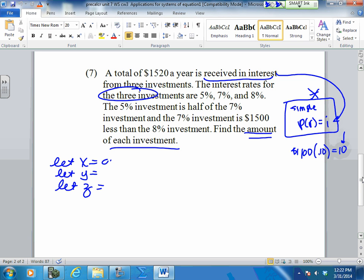So let X equal, let Y equal, let Z equal. We're looking for the amount that was invested. So the amount at 5%, the amount at 7%, and the amount at 8%. How do I write 5% as a decimal? 0.05. Then 0.07, then 0.08. Now here's your first one. This one's the easiest one to go for. We need three equations.